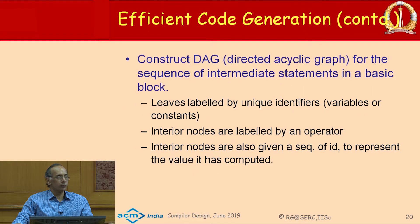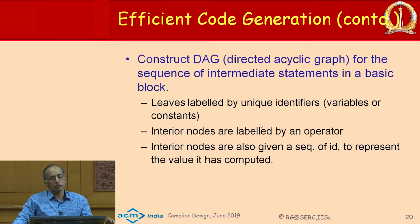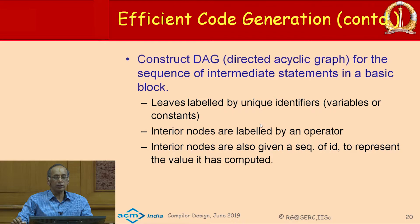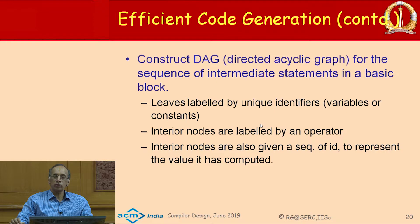Let us see how we can perform code generation by constructing a directed acyclic graph. If you look at a basic block, it has a sequence of statements in three-address format. We look at all of them and then construct a DAG — a directed acyclic graph. In this DAG, the leaves represent unique identifiers, meaning variables or constants in your program, and the interior nodes are operations like plus or minus. We then generate code by traversing this DAG in a sequence to produce efficient code.